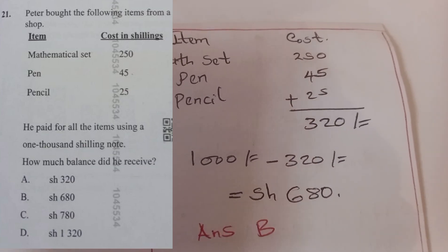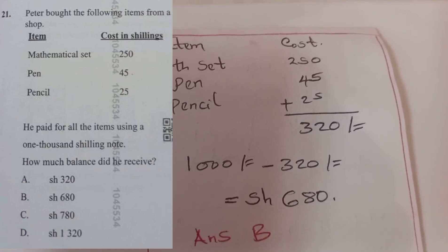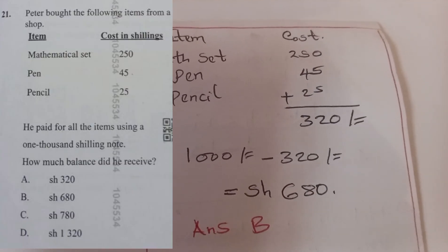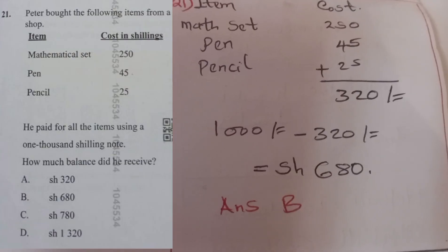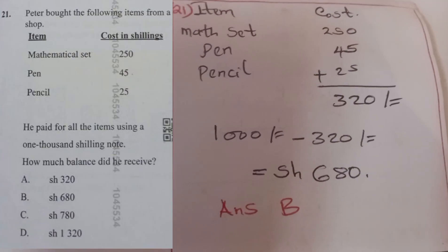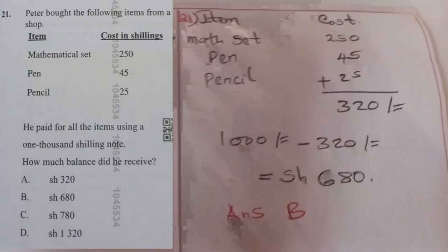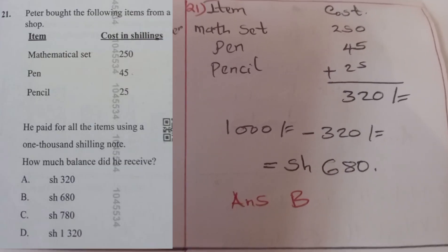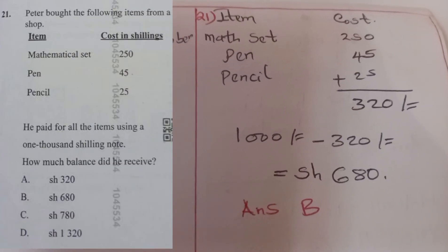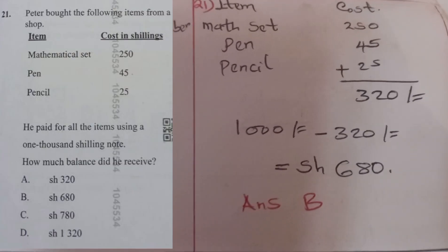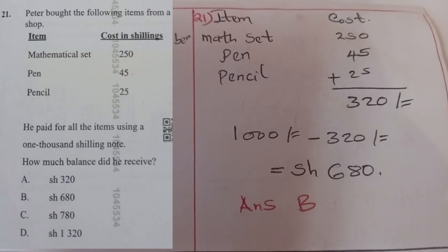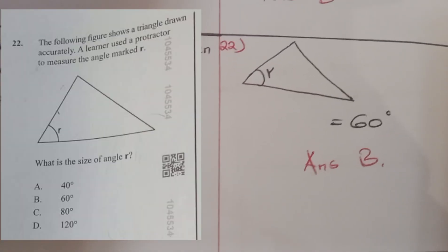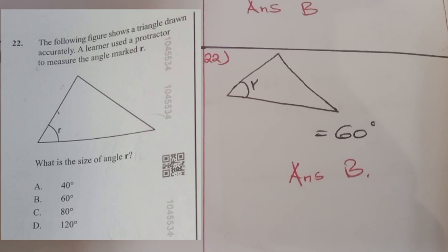Question twenty-one: Peter bought items from a shop — a mathematics set for 250 shillings, a pen for 45 shillings, and a pencil for 25 shillings. The total is 320 shillings. He paid with a 1,000 shilling note, so his balance is 1,000 minus 320 equals 680 shillings. The answer was B. For question twenty-two, the answer was 60 degrees.